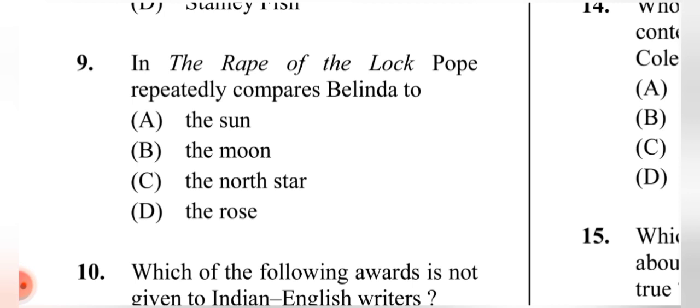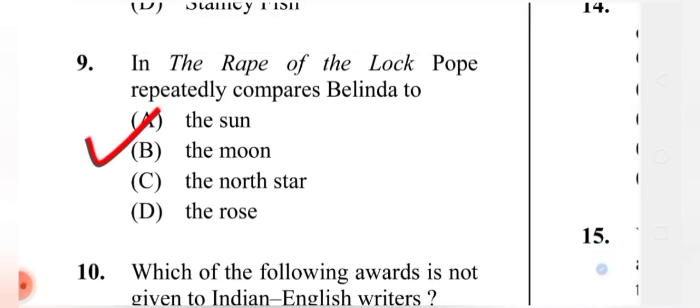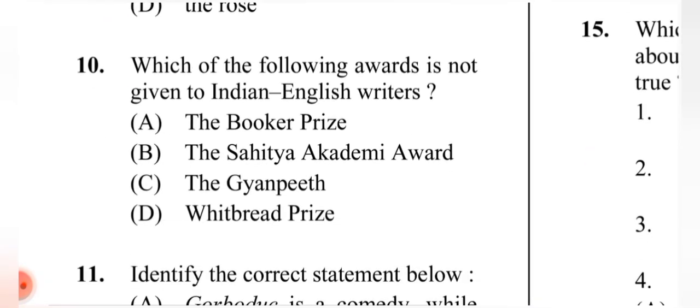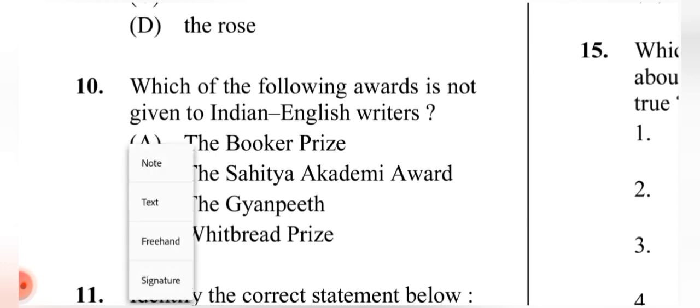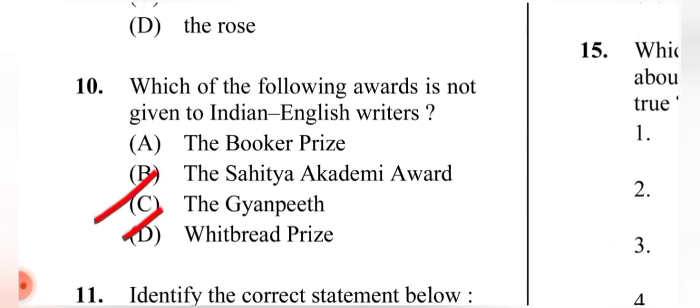Question 9: 'The Rape of the Lock' by Pope repeatedly compares Belinda to what? The correct answer is (A) the sun. Question 10: Which of the following awards is NOT given to Indian English writers? The correct answers are (C) and (D) — the Gyanpith and the Whitbread Prize.